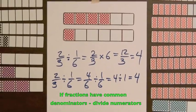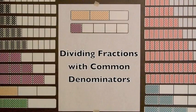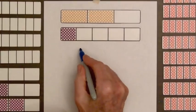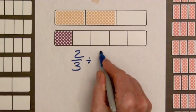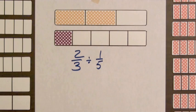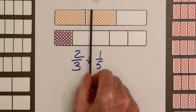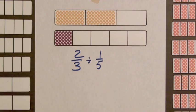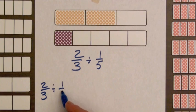Let's look at one more example of dividing fractions by getting common denominators. Here we have two-thirds divided by one-fifth. Two-thirds divided by one-fifth. Now we can see that one-fifth divides in once, twice, three times, a little bit more than three times.